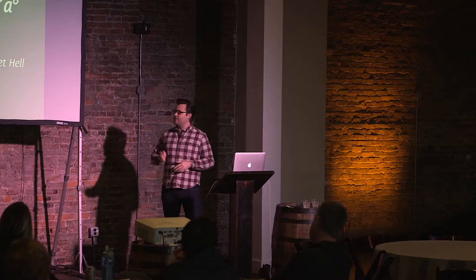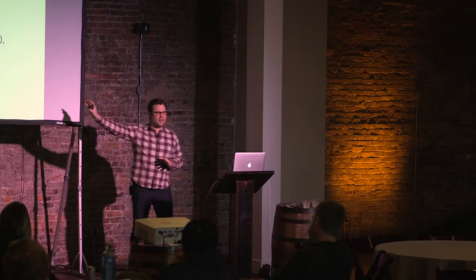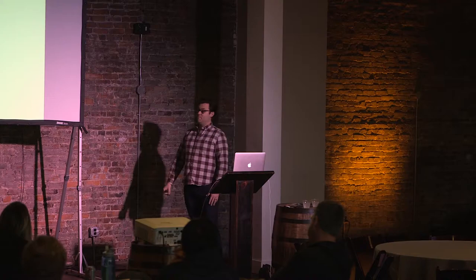Just getting the temperature of the room — how many people have seen something that looks like this somewhere in your code? It comes out of the database, maybe it's mostly right. You are talking about British pounds, but there's an extra character there. Or maybe it comes out looking like this — the weird question marks. That's actually called a Unicode replacement character, by the way.